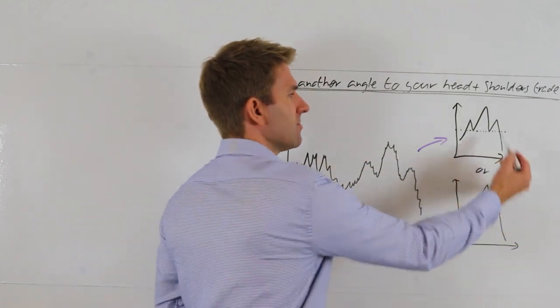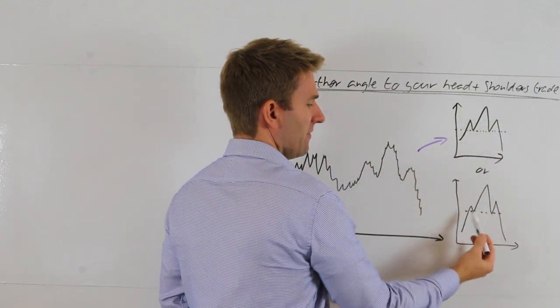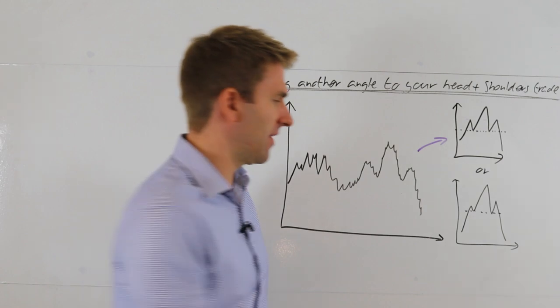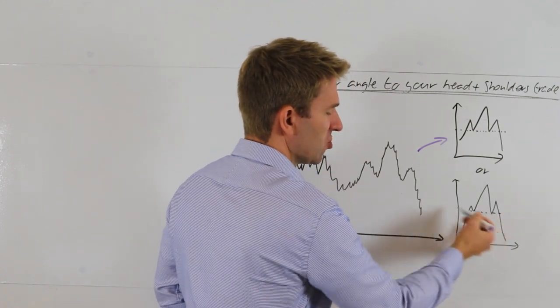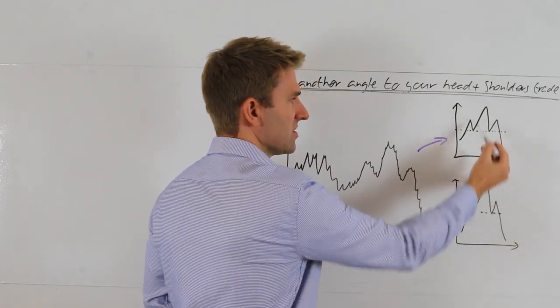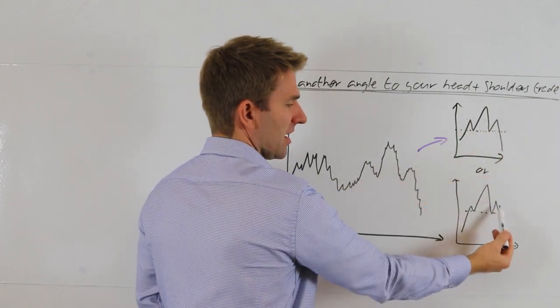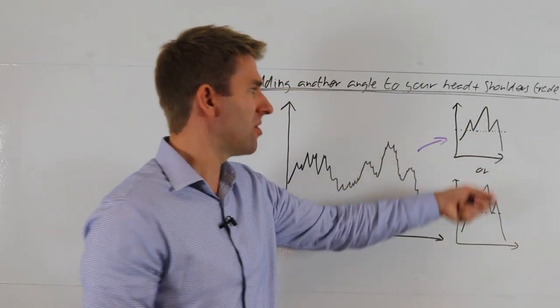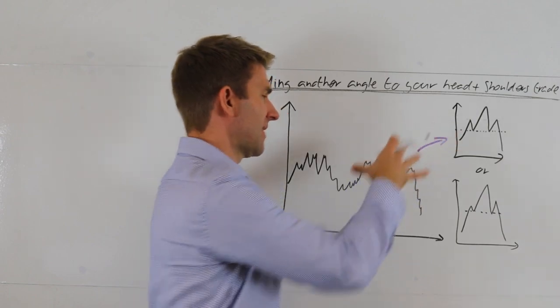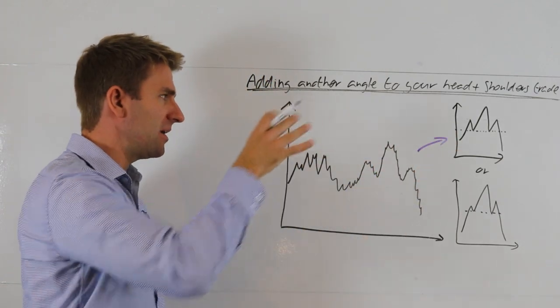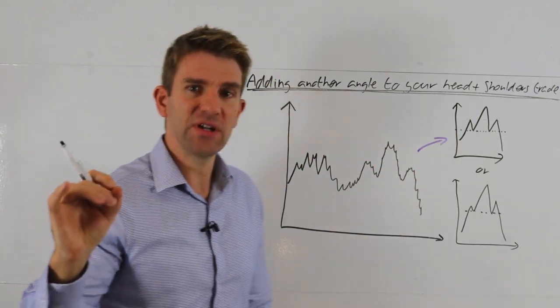Look at this chart here. By the way, I've drawn that symmetrically, but very often that's not the case. The point of the head and shoulders is that you've got the neckline however you draw it. It's not necessarily the symmetry between the two shoulders because that one there's slightly higher. So adding another dimension is to see where the head and shoulders occur.